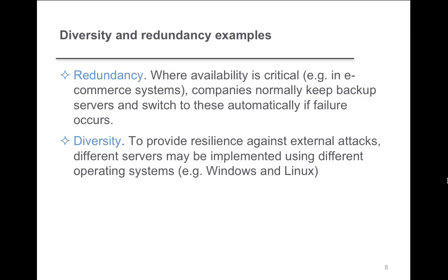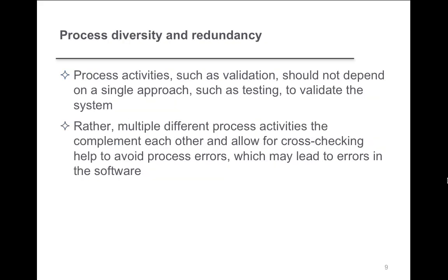Redundancy where availability is critical — e-commerce systems: companies normally keep backup servers and switch automatically. Diversity to produce resilience against external attacks: different servers may be implemented using different operating systems, a Windows and a Linux. So if you get a virus that attacks a Windows system, it's not going to affect the Linux one. You've got diversity in the redundancy as well, working together in terms of what kind of servers you have.